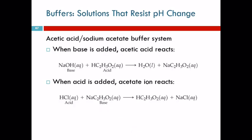An example of a buffer is acetic acid and sodium acetate. Acetic acid is a weak acid—it's not one of the six strong acids, so it must be weak. Acetate is the conjugate base of acetic acid.